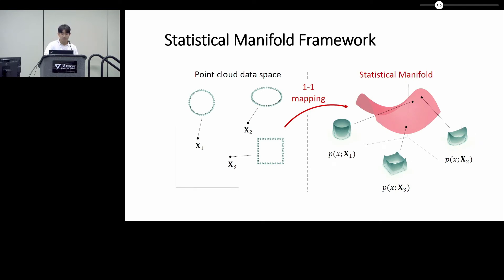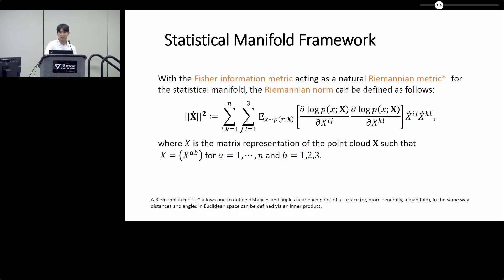To address this issue in our work, we propose a statistical manifold framework. The core idea behind our approach is, first, to interpret a point cloud data as a set of samples from some underlying probability density function. And by constructing one-to-one mapping, we interpret the point cloud data space as a space of probability density functions, which is then given the structure of the statistical manifold. Then we use the Fisher information metric as a natural Riemannian metric for the statistical manifold.